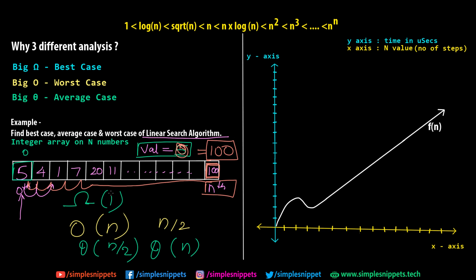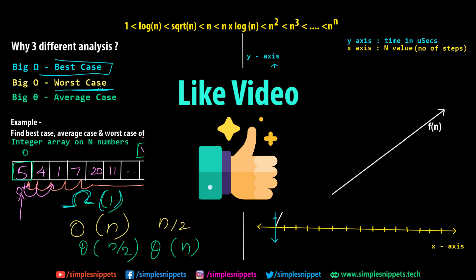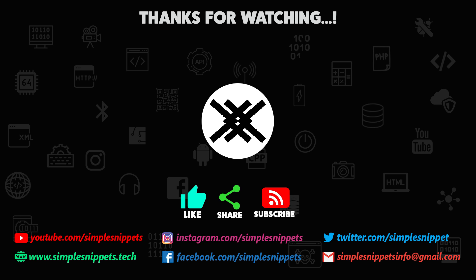So you can see we had two different values and hence we needed to find the different cases. These three analyses help us properly bound our actual function: defining the upper limit, the lower limit, and the average, ensuring our algorithm behaves within those limits. That was the three different time complexity notations — big O, big omega, and big theta. Hope you got a good understanding. If you have any queries, put them in the comments, and if you liked this video, please give it a thumbs up. See you in the next one!